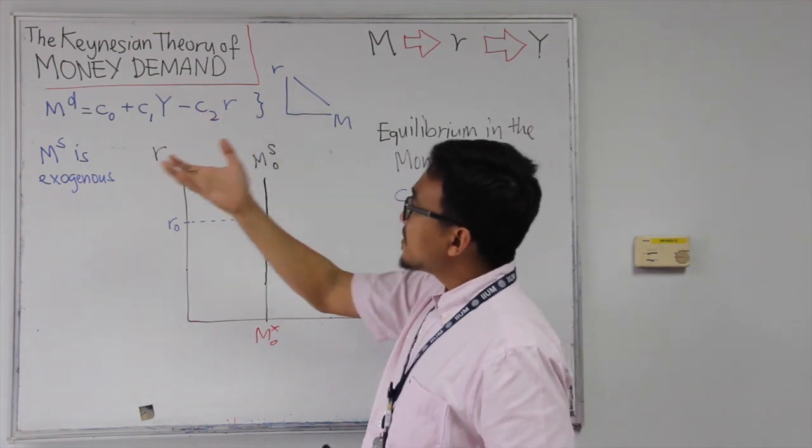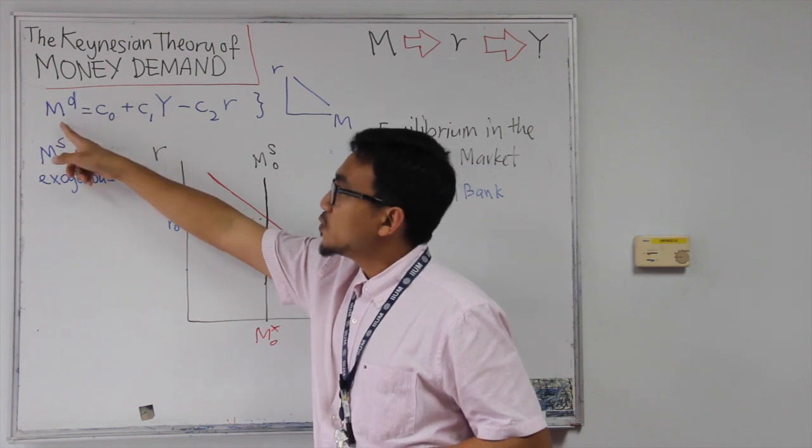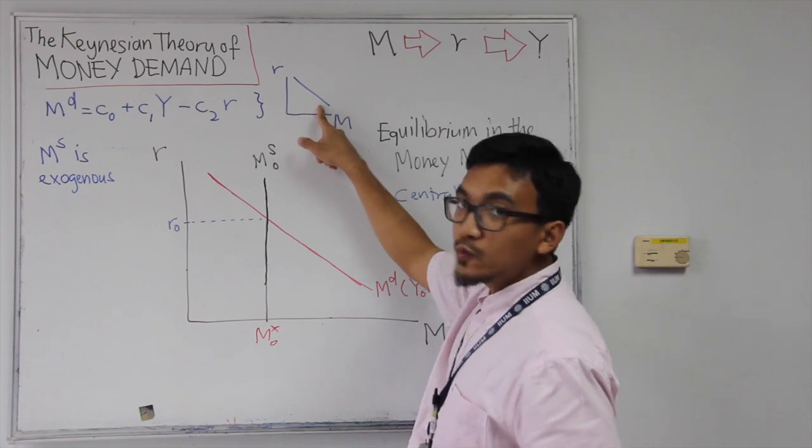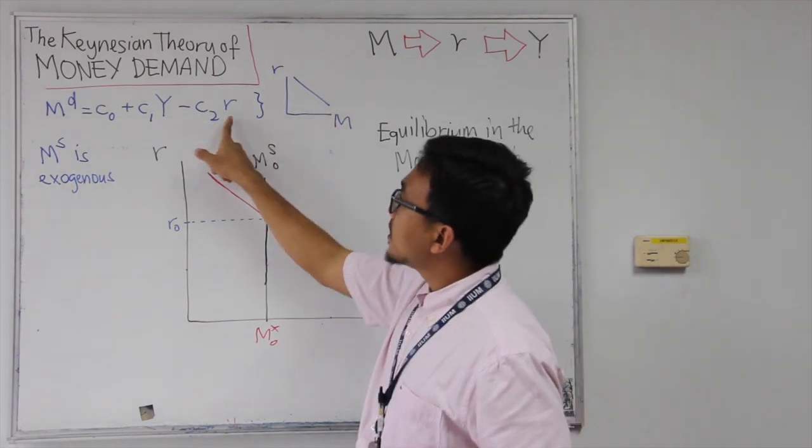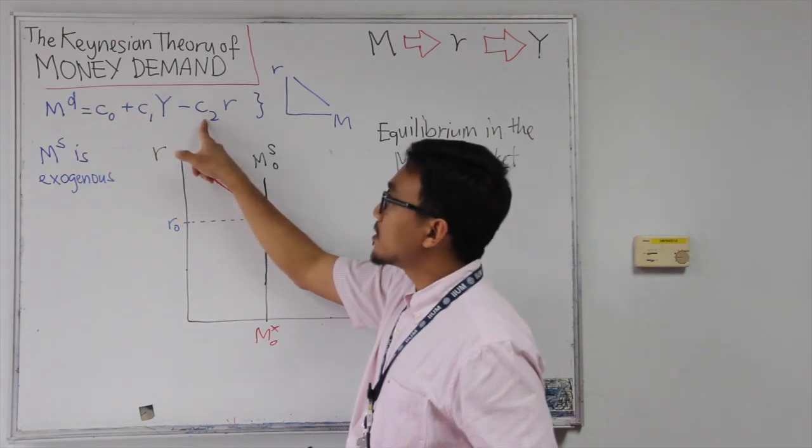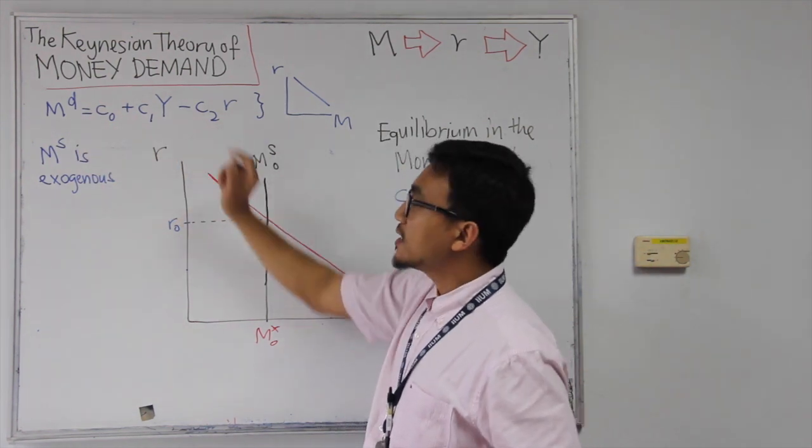So if we specifically look at the relationship between total demand for money and interest rate, we know that the total demand for money is downward sloping. So if interest rate goes up by one unit, the demand for money will go down by C2, negative relationship.